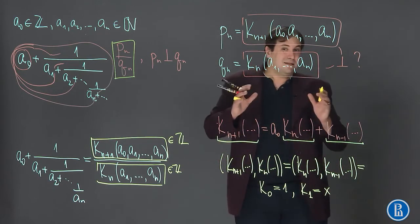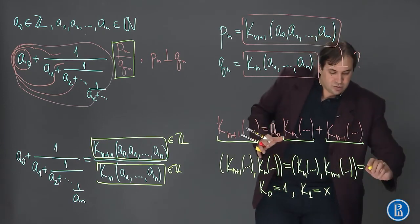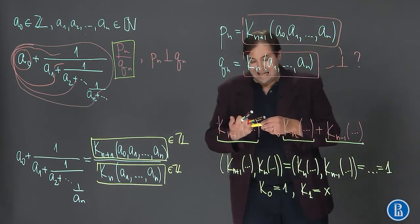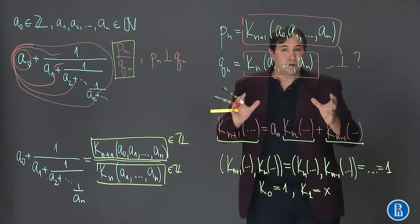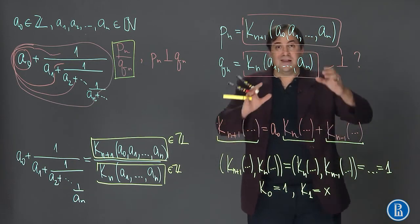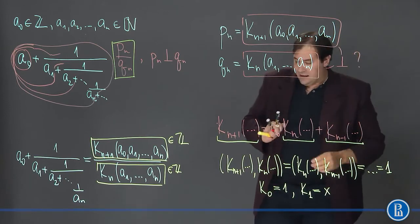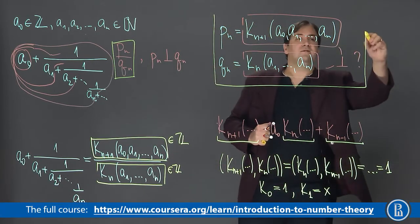So we can conclude that all neighbor Continuants, such as these, are mutually prime. Therefore, these Continuants are also mutually prime and these equalities indeed hold. This is true.